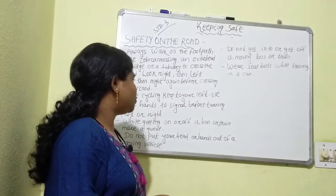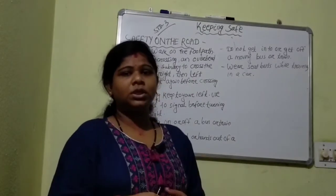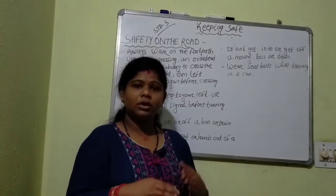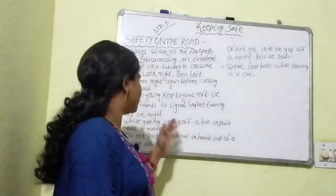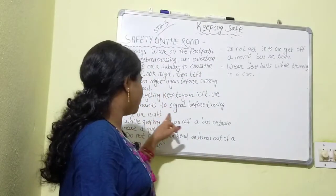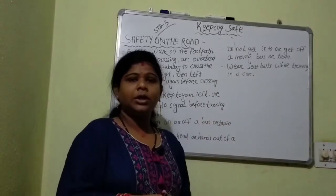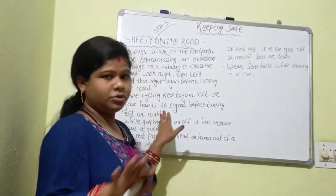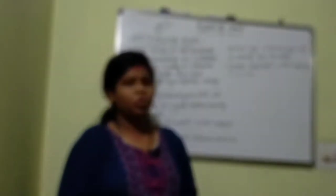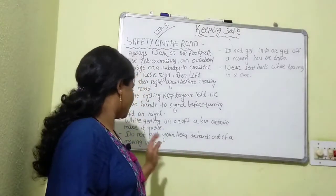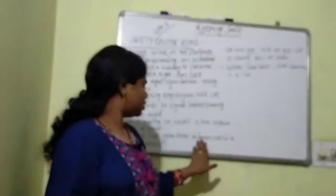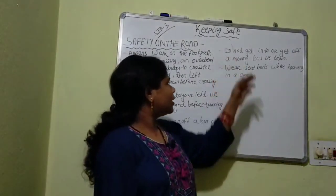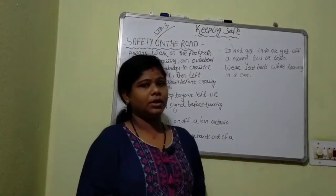While riding a cycle on the road, always keep to the left side. Use your hands as signals before turning left or right — if you need to turn, put your hand out like a signal. While getting on or off a bus, make a queue. Do not put your head or hands out of a moving vehicle. Do not get on or off a moving bus.